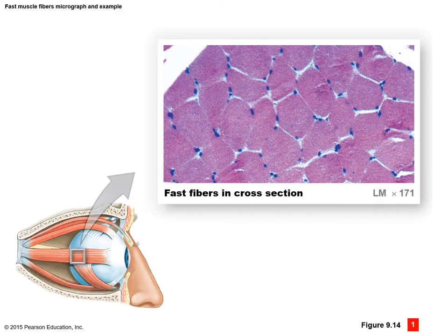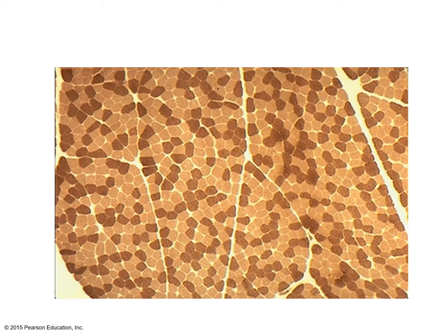The fast fibers are noticeably much larger and thicker than the slow twitch fibers. In a cross-sectional view of a typical muscle in the body, you can see different colors—some darker, some lighter—interspersed throughout. This is because all muscles in the body have Type 1, Type 2A, and Type 2X fibers in varying degrees.